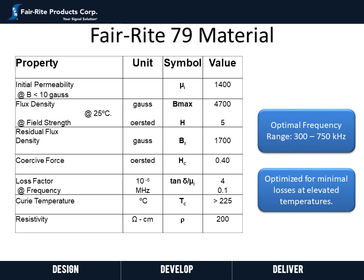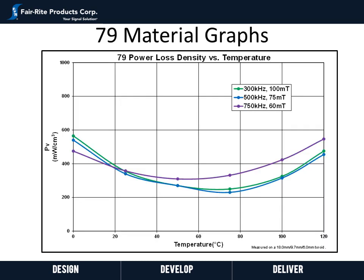79 material is a 1400 perm manganese zinc material with an optimal frequency range of 300 to 750 kilohertz, performing well even up to around a megahertz or so. It has been optimized for minimal losses at elevated temperatures. As can be seen here, we are plotting power loss density over temperature for three frequencies and flux densities in the optimal frequency range of 300 kilohertz to 750 kilohertz — the power loss density is fairly stable and optimized around 80 degrees Celsius.